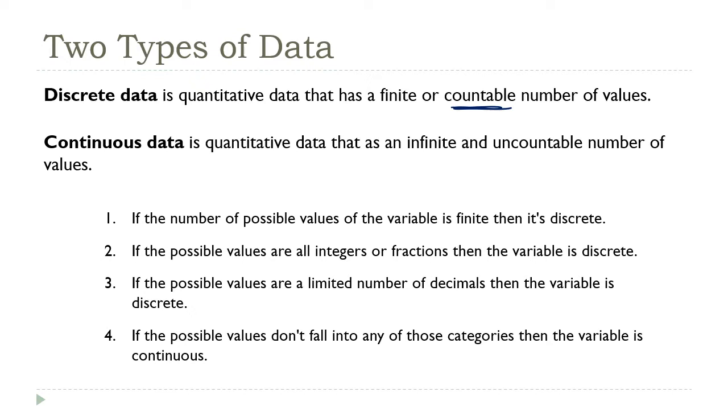If the values are all integers, for example, the number of trees in a forest, then the variable is discrete, even though there's no way to put an upper bound on the possible number of values.